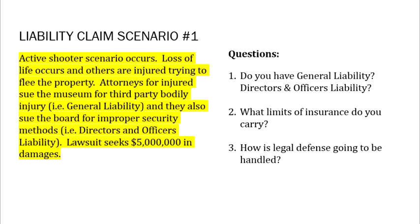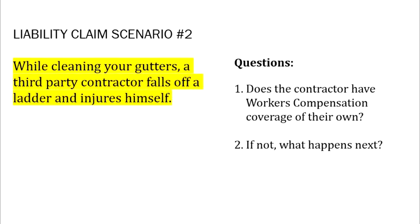The second scenario: while cleaning your gutters, a third-party contractor falls off a ladder and injures himself. You hired a local contractor — a guy in his truck with a ladder — to clean your gutters cheaply. He climbs to the top and falls off. He's hurt, he doesn't have his own insurance, you've never collected proof of insurance. He can sue your organization for his injuries and file a claim under your workers' compensation. There's a whole bunch of things that could happen — and that's what we want to avoid. This takes us into the next part: contractual risk transfer.